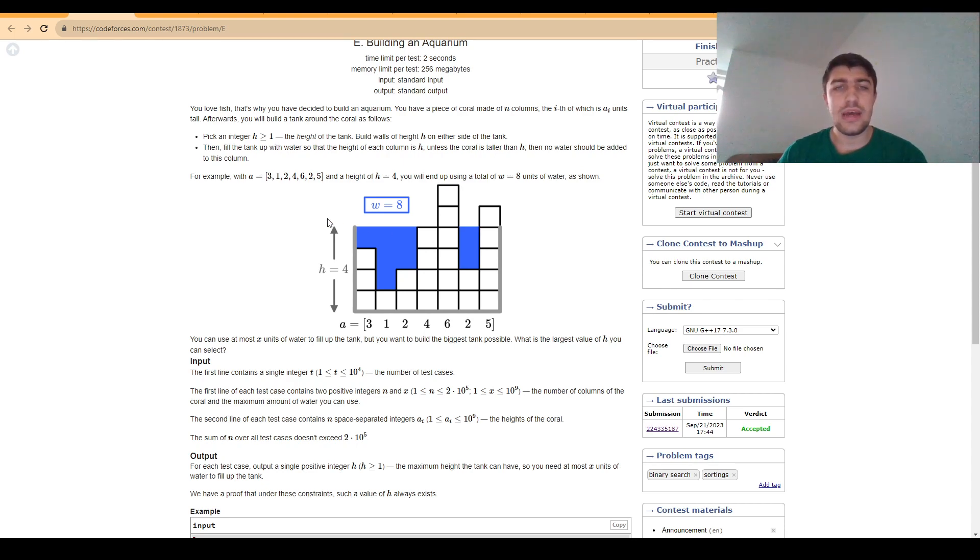Given that we know how much water we can use and how many piles we have, we can think of various approaches to solve this problem. But the most obvious and easiest one to come up with is a binary search based approach.